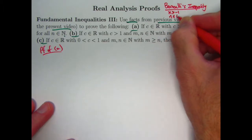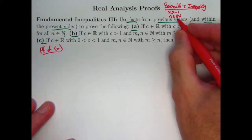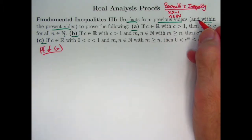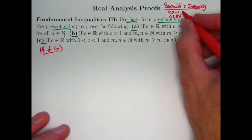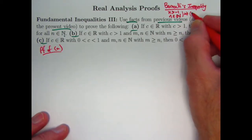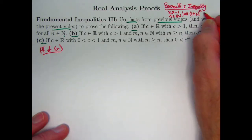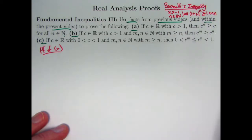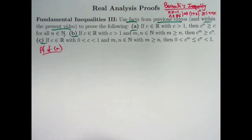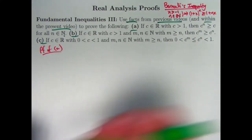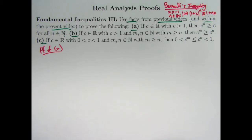It says that if you've got a real number x that's bigger than negative one, and n happens to be a positive integer, an element of the natural numbers, that implies that (1+x)^n is greater than or equal to 1 + nx. I'm going to make use of that here. I proved that with induction. I will make use of it in part A of this problem and avoid induction.